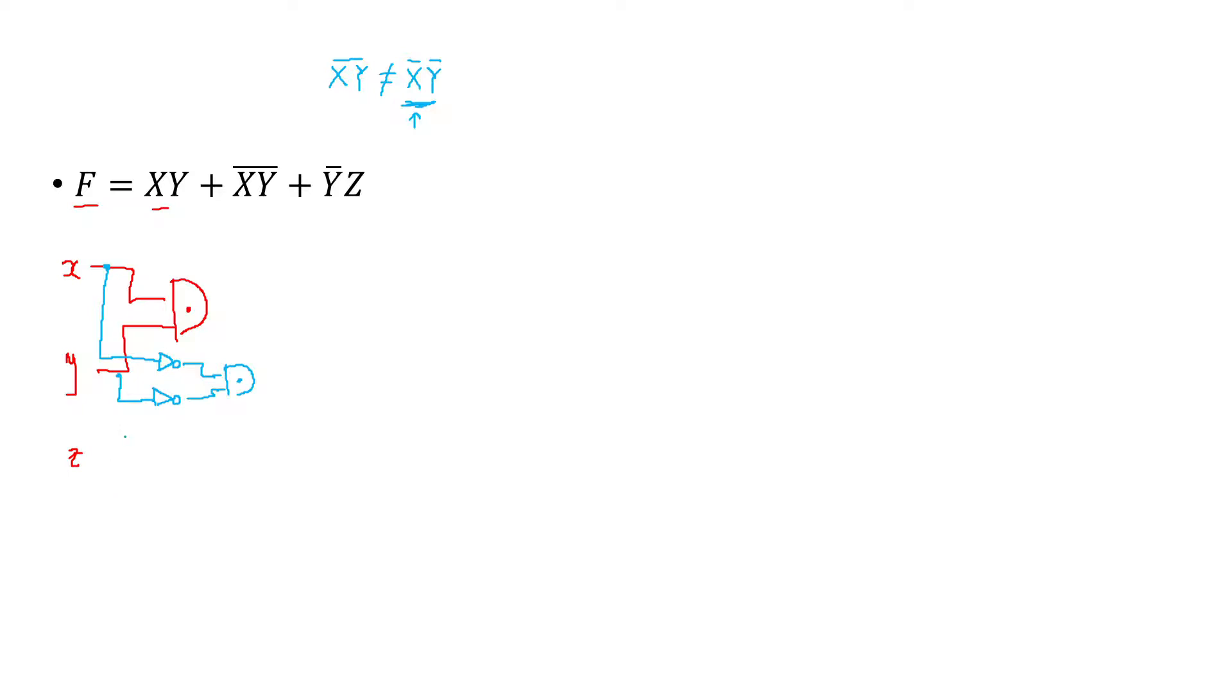Finally, we are missing the last part of the operation. I'm gonna write that in green: NOT Y and Z. I can use another one of these gates and the NOT Y I can get from here.